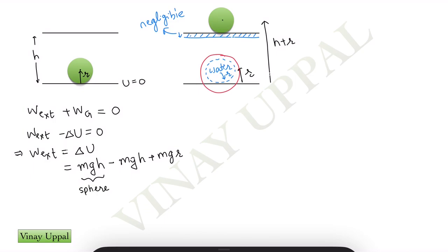Note that I have taken the water mass as m and the reason is that the mass of the water occupying the original space of the sphere and mass of the sphere itself will be same because density is same and therefore this will simply be equal to mgr and that is your answer.